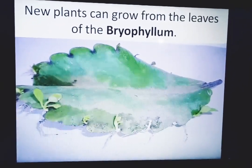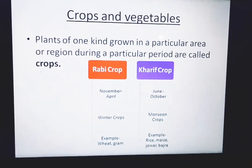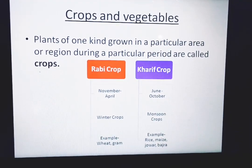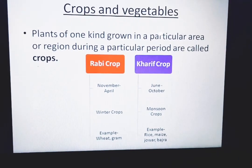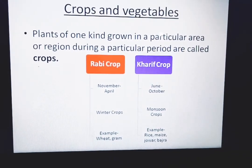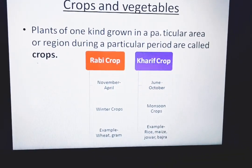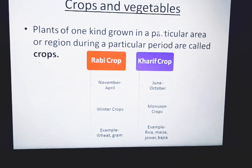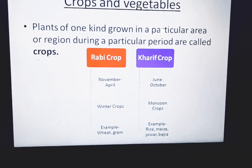Next topic: crops and vegetables. Plants of one kind grown in a particular area or region during a particular period are called crops. There are two types of crops: the rabi crops and the kharif crops. Rabi crops grow in the months of November to April and are called winter crops — examples are wheat and gram.